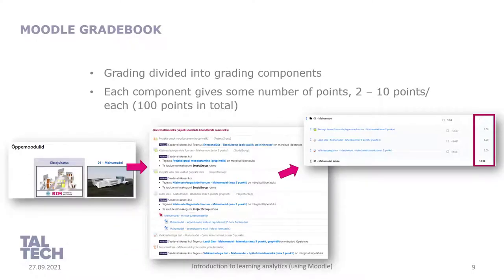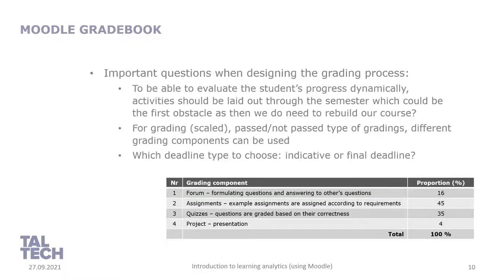If grading is divided into components and each component gives some number of points — or maybe it's just pass/not pass — then we can take this and use it when carrying out learning analytics. What are the important questions when designing the grading process? This is just one example and an approach that supports learning analytics. From this slide you can see an example of how to structure things to enable learning analytics.